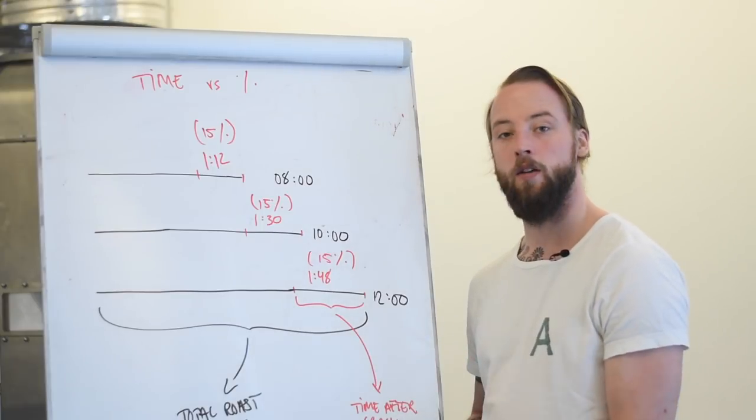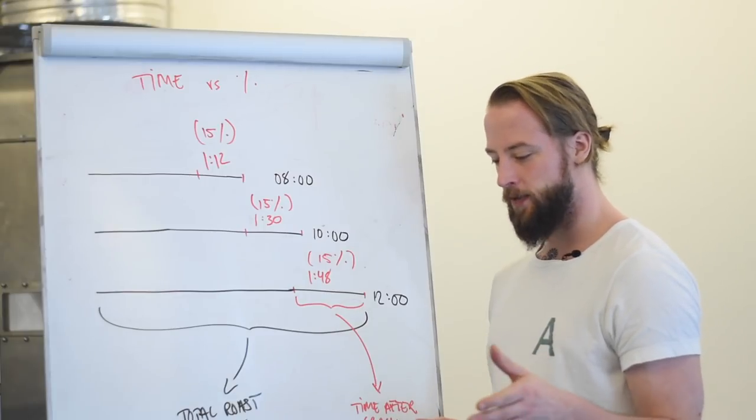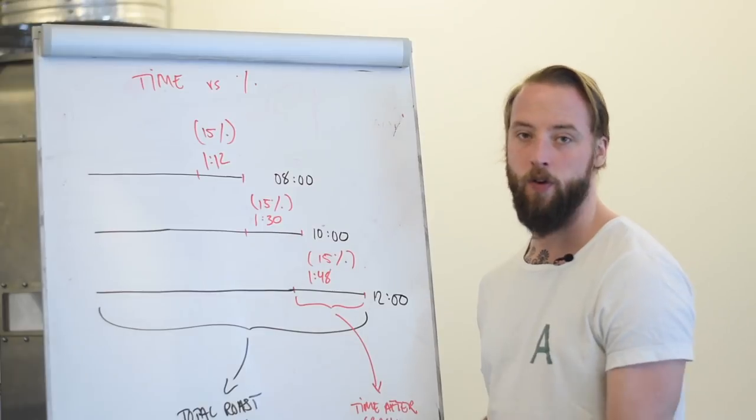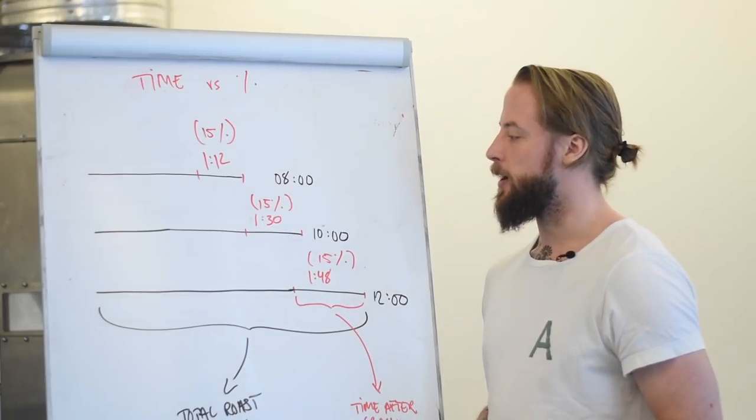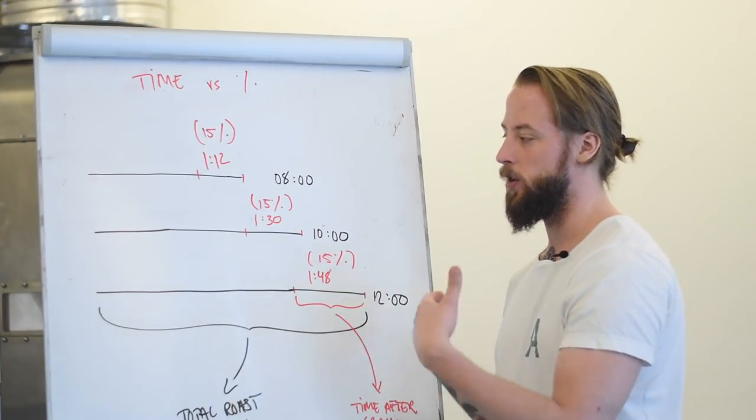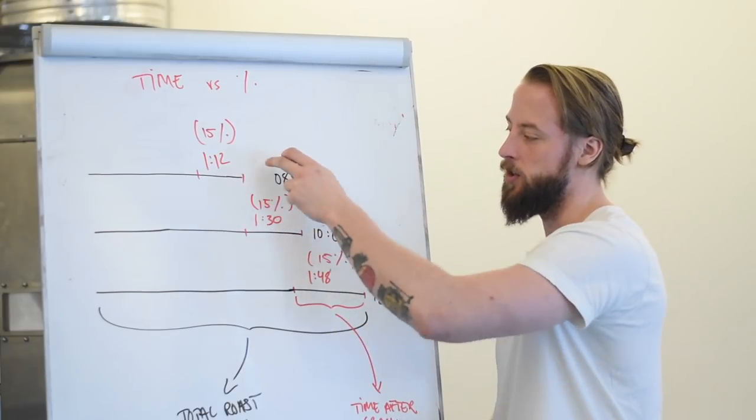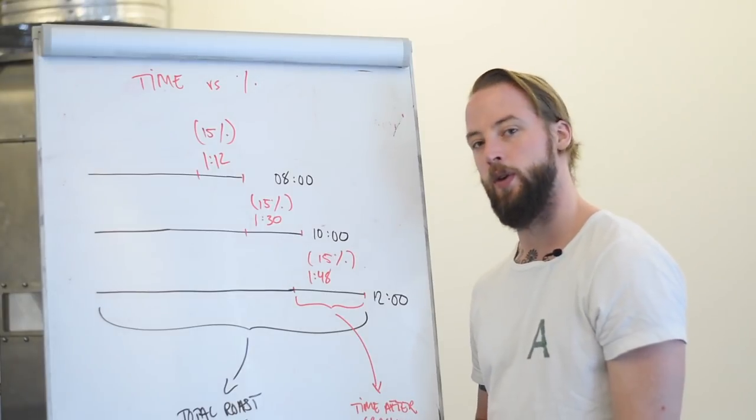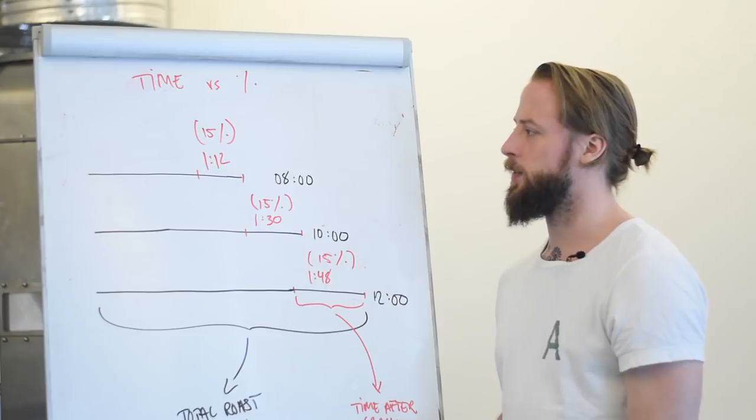What happens after first crack doesn't give a damn about what happened before first crack. It's still going to go through a certain amount of reactions, which is very much not based on, to that extent, the total duration of the roast. Which is why saying that you should have the same percentage on different roast times really will just make you roast very inconsistent.